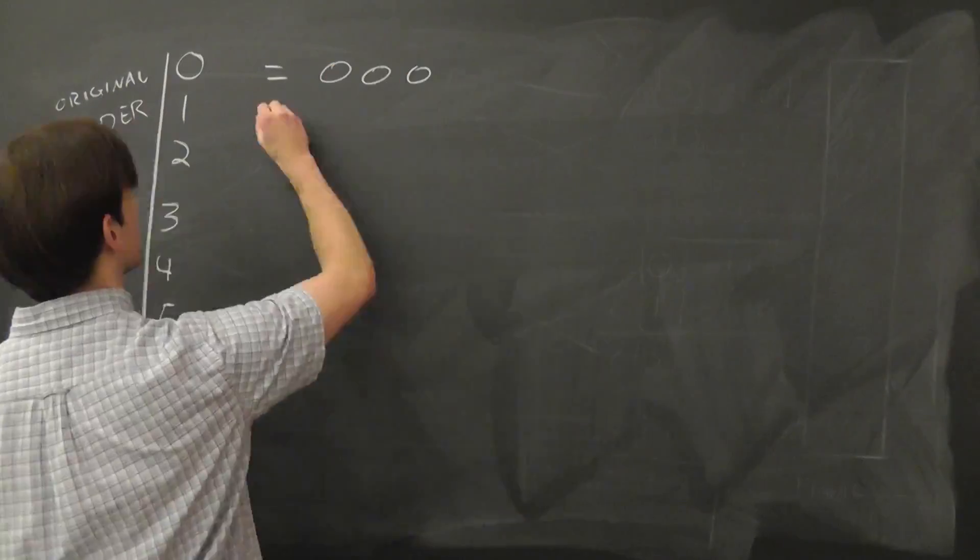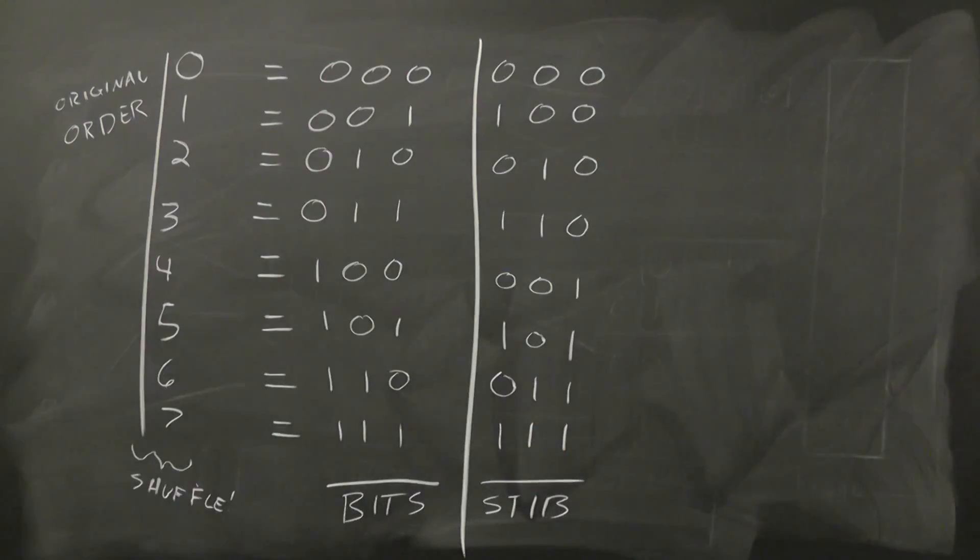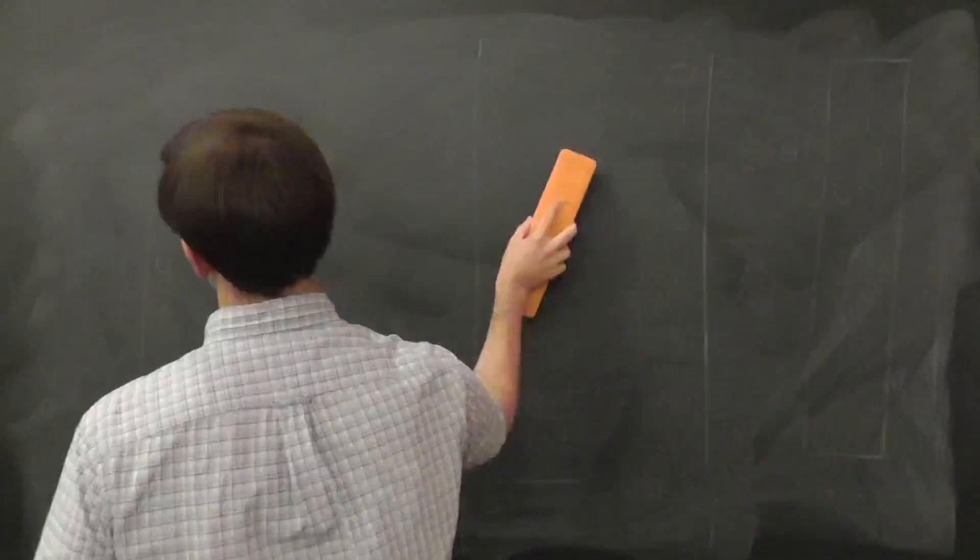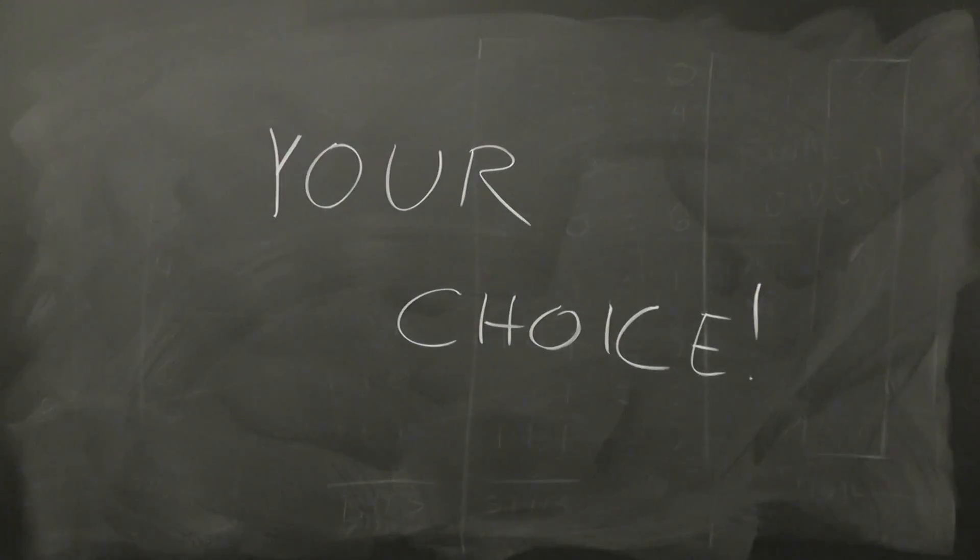Another method uses bit reverse ordering. Here we write out the bit strings for every number and flip them, swapping the appropriate elements afterwards. Depending on the language, one of these methods might be easier to implement than the other.